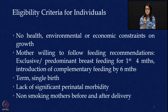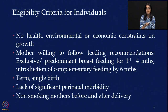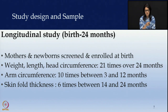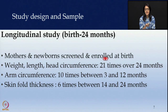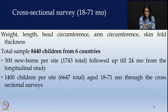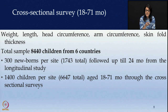No exposure to smoke was ensured. In the longitudinal study, mothers and newborns were screened and enrolled at birth. Weight, length, and head circumference were taken 21 times over 24 months. Arm circumference was taken 10 times between 3 to 12 months of age, and skin fold thickness was taken 6 times between 14 to 24 months of age. Cross-sectional study also collected weight, length, head circumference, arm circumference, and skin fold thickness.